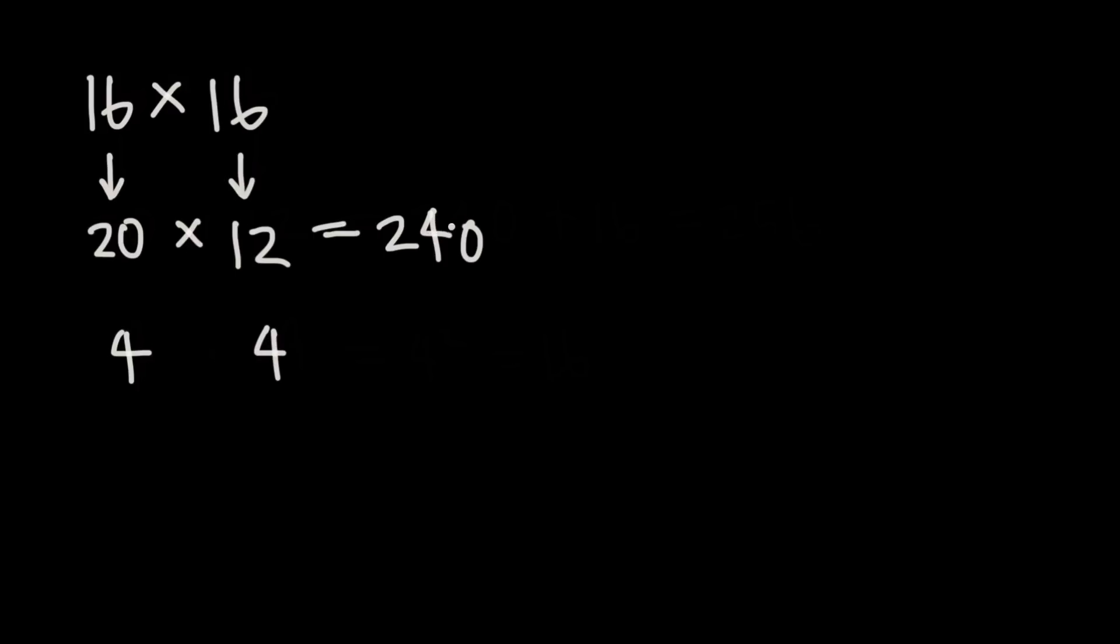Now we're close to our final answer except that we have to bring these 4s back into play. So again we multiply them, 4 times 4 is 16 and then we add 16 back to 240 and we get 256 and 256 is the product of 16 times 16 and that's the trick you can use for multiplying larger squares together.